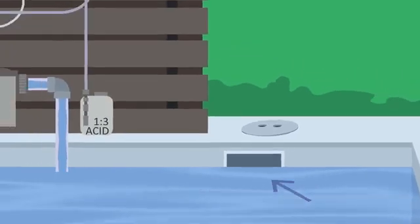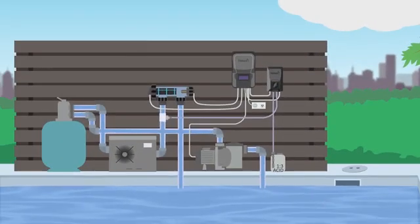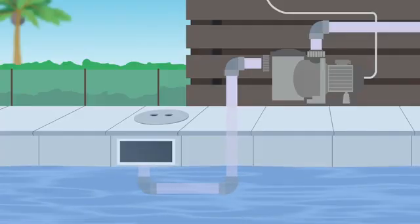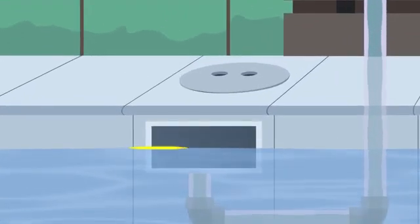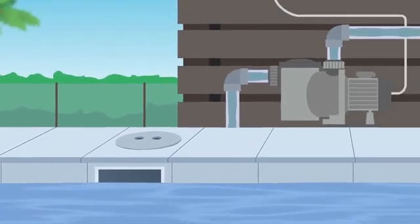A pool skimmer collects debris from the pool surface and passes it through the pool's filtration system. Ensuring that your pool is at the correct water level, at least halfway up the skimmer, will ensure the skimmer works most effectively.